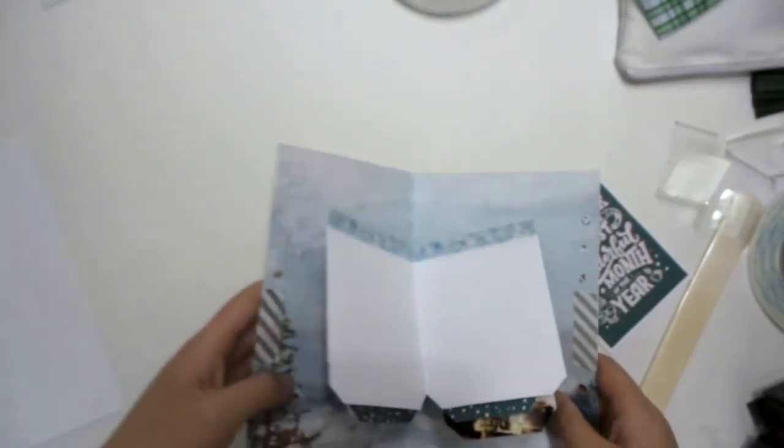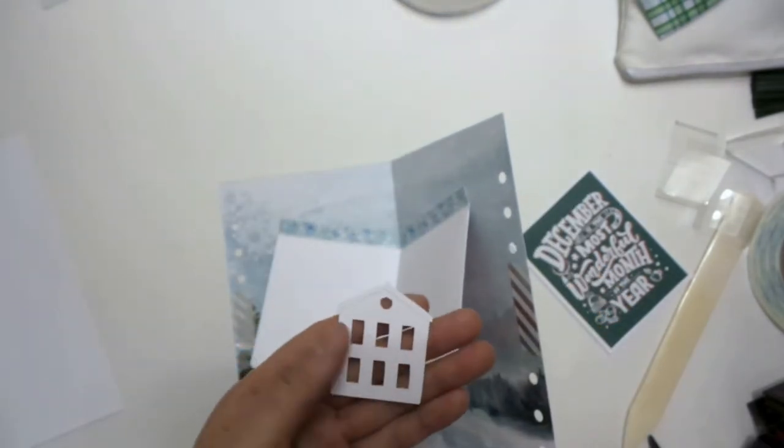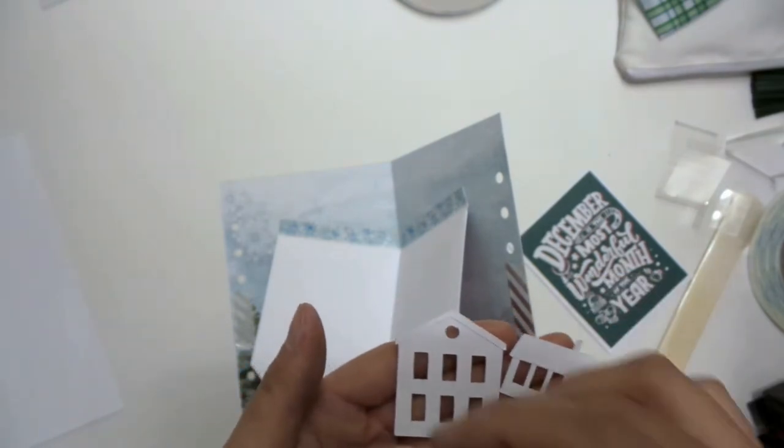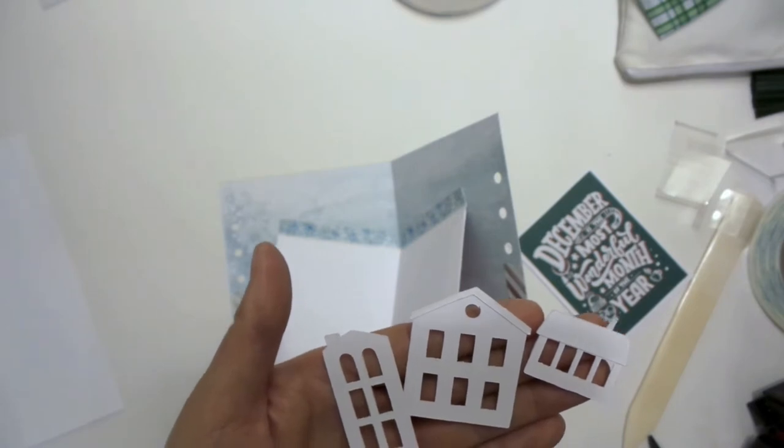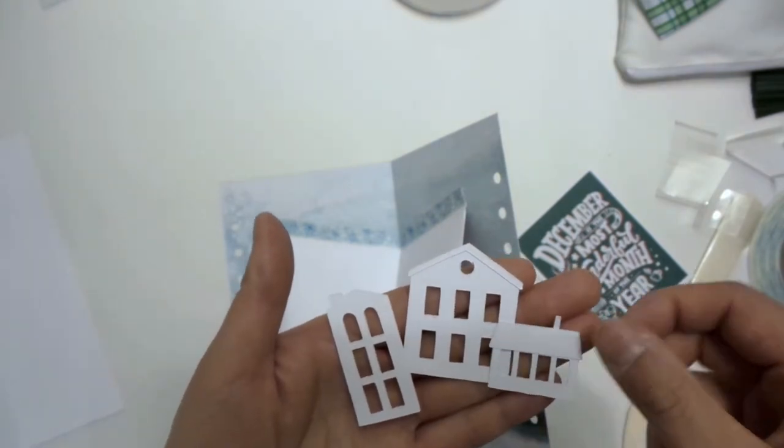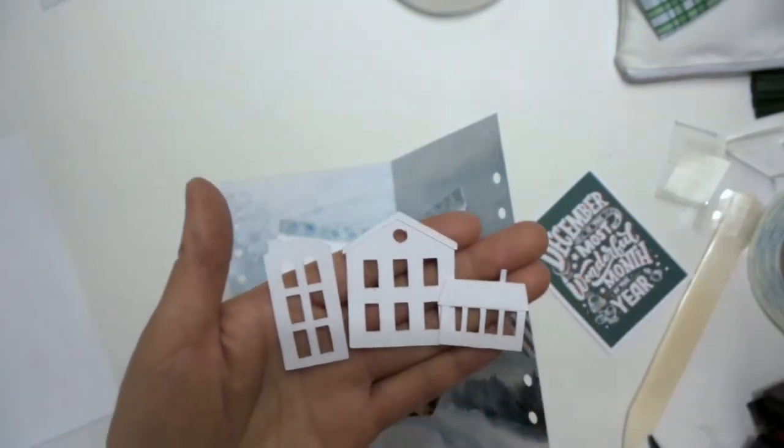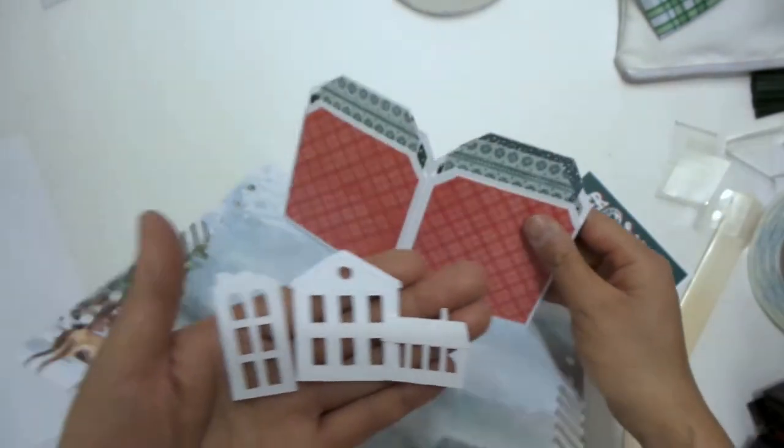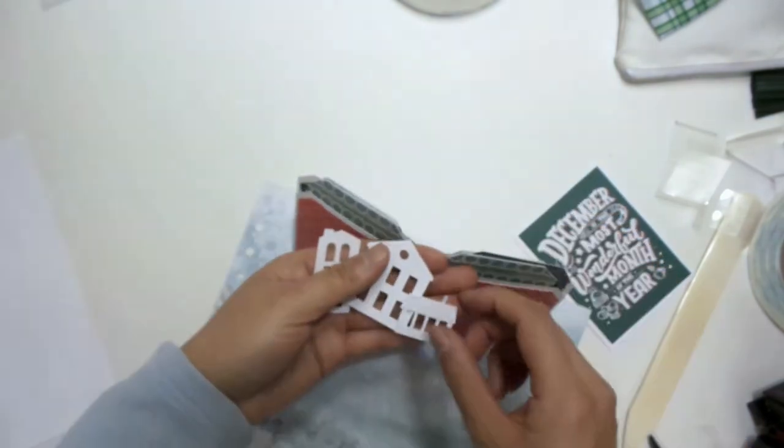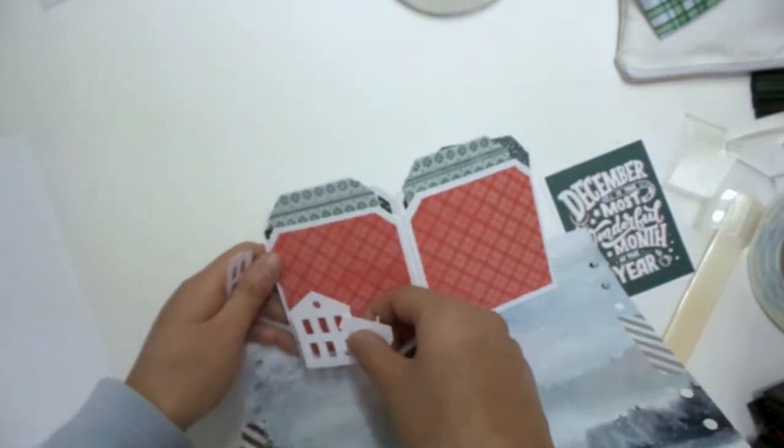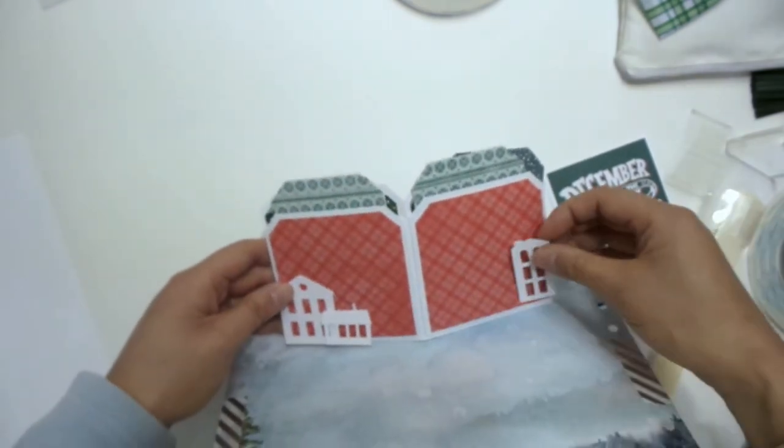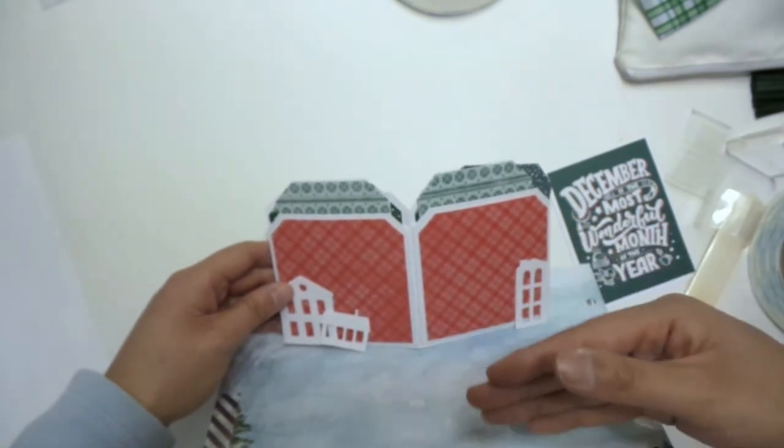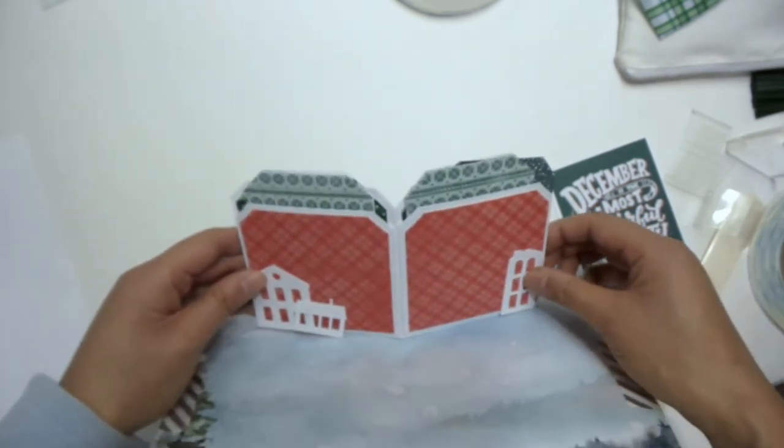So next up, we're going to attach these houses. I have die-cut some of these houses from Carrie Bradford Studios. I think it's called Christmas Village and they come with these cute houses and I just resized them so that they would kind of go with my layout here. We're just going to layer these cut pieces onto this red piece here, but I want to do it in a way that it's going to pop off of this page to give it some dimension.